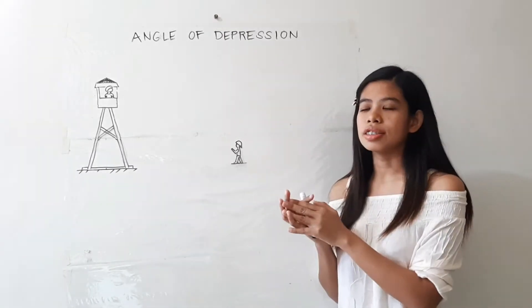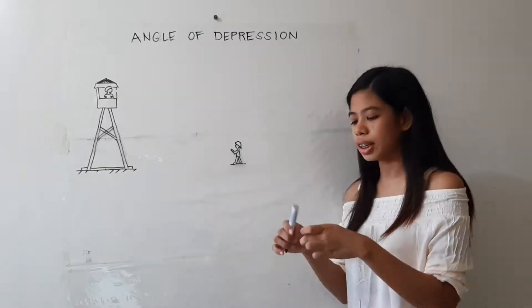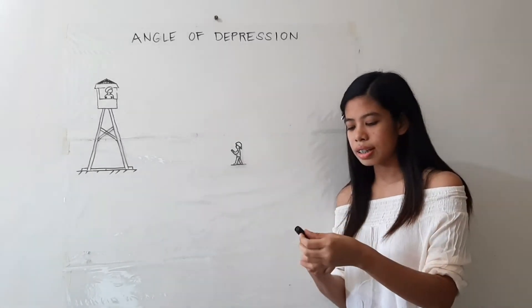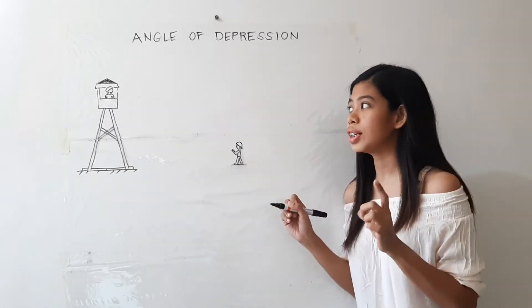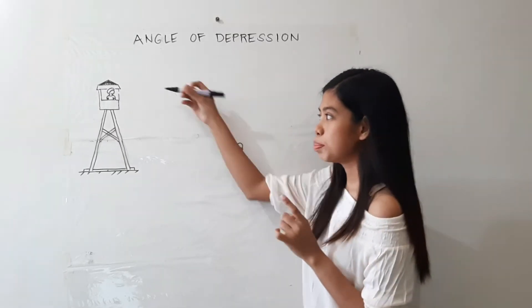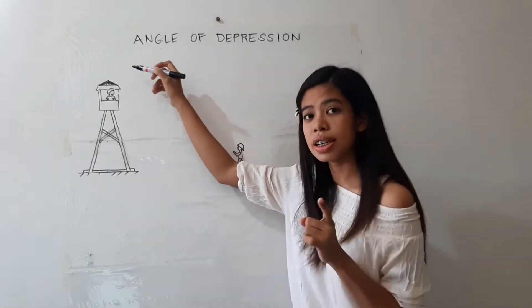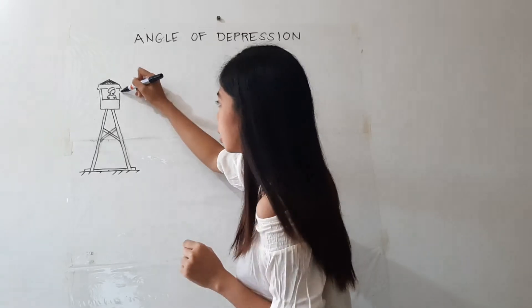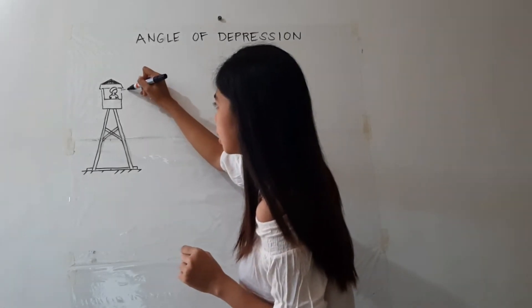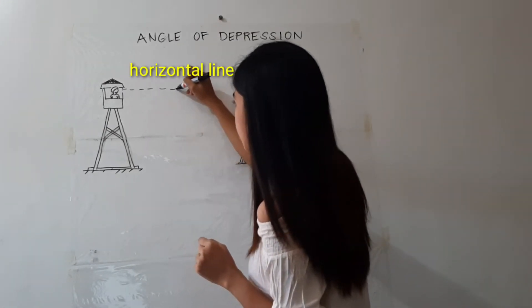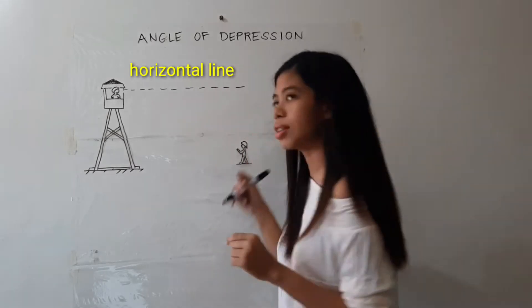Going back to the lesson, since the angle of depression is the angle formed between the horizontal line, even if the observer is at the top, we still have the horizontal line. So this is the horizontal line.